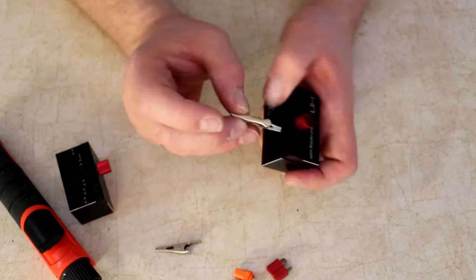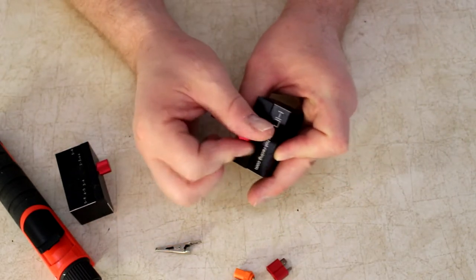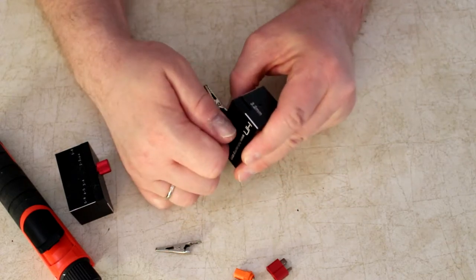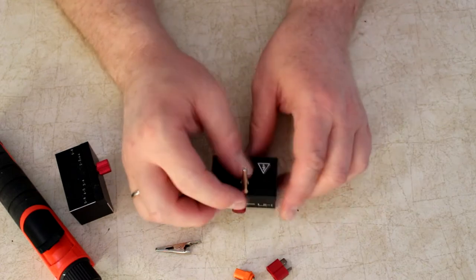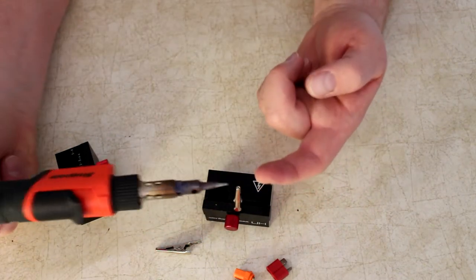If I do use the alligator clips, I put them in the middle of the bolt here. And open it, put your wire, and you're able to grab your gun and directly solder.